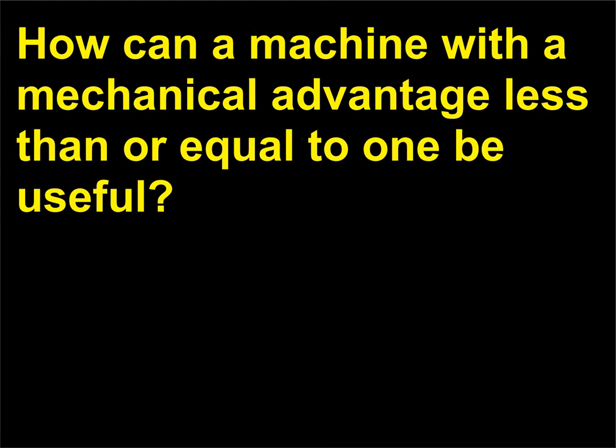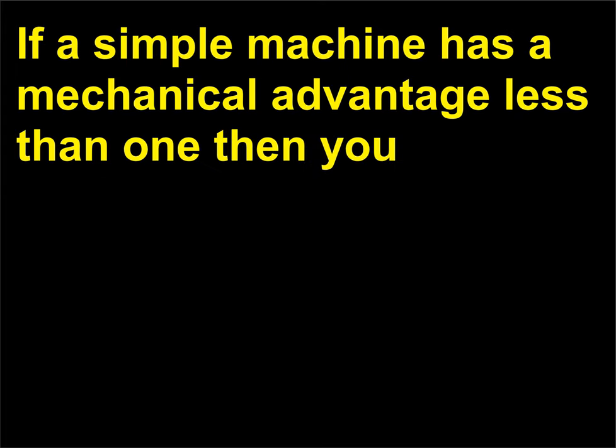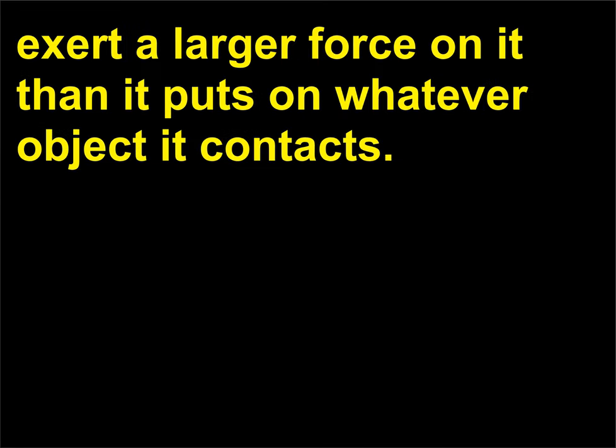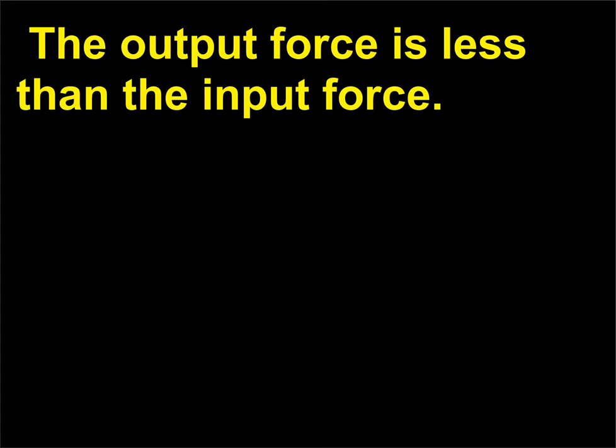How can a machine with a mechanical advantage less than or equal to 1 be useful? If a simple machine has a mechanical advantage less than 1 then you exert a larger force on it than it puts on whatever object it contacts. The output force is less than the input force.